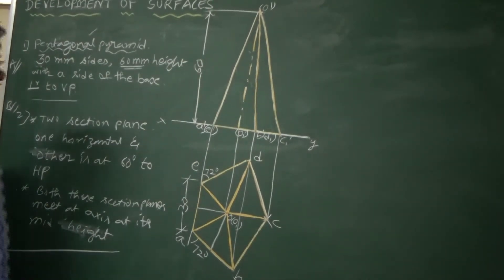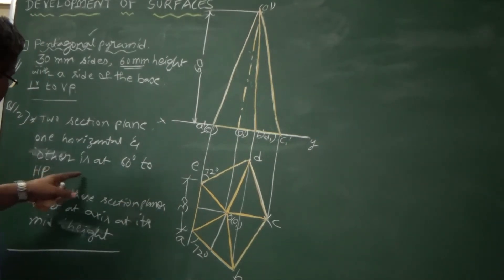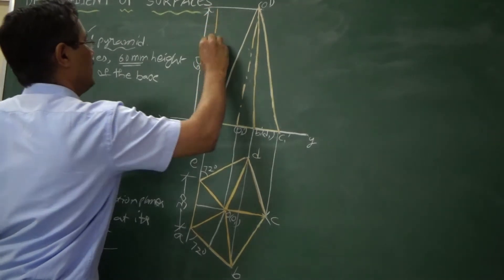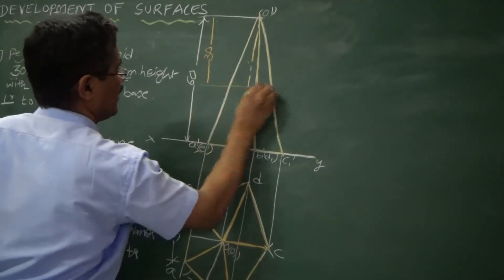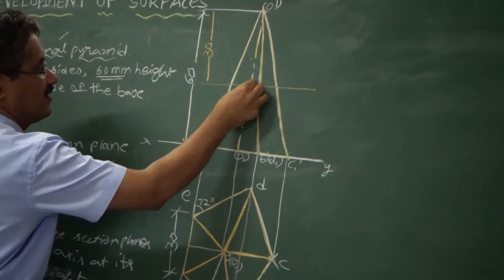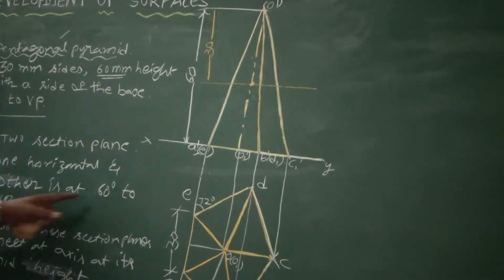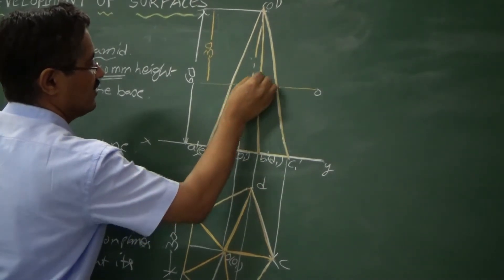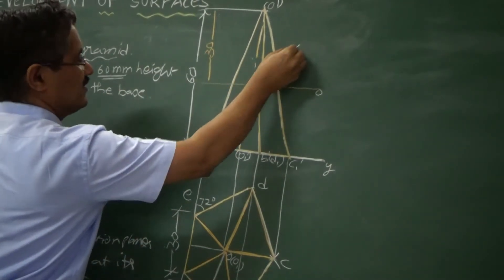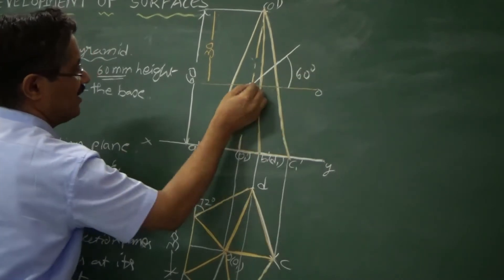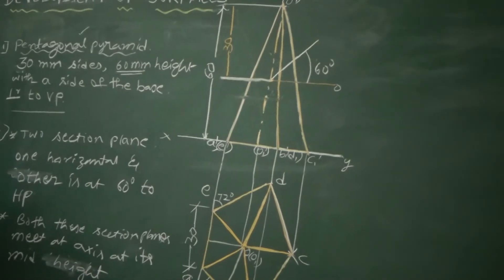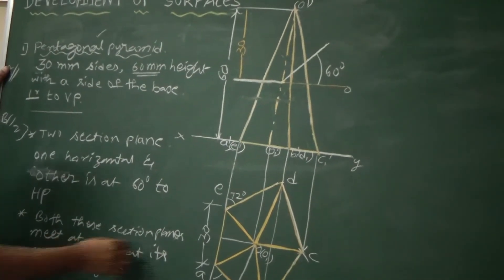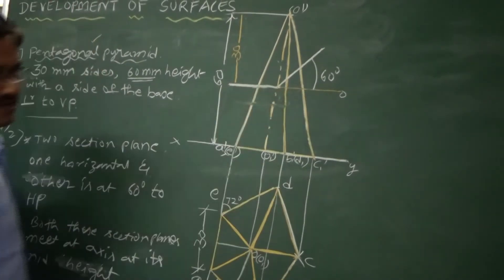We now move to Part B — the section plane part. The section plane meets the axis at its mid-height, so mark 30 mm and draw a line there. You have to draw one line at 60 degrees and another horizontal line, both meeting at the axis at mid-height. There are two section planes: one at 60 degrees and the other horizontal.